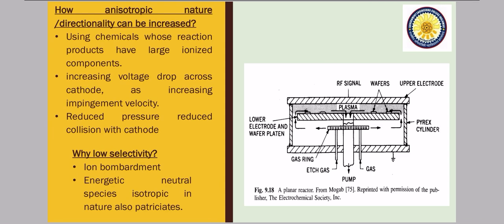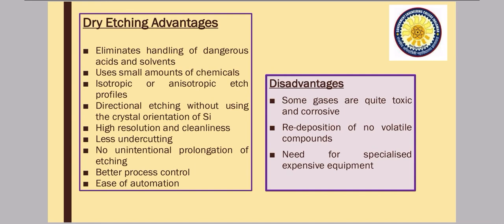Moving on, let's discuss the advantages and disadvantages of dry etching. Starting with advantages: it eliminates the handling of dangerous acids and solvents, unlike wet etching where very strong acids are used. It uses a very small amount of chemicals. We can get isotropic or anisotropic etch profiles. It allows directional etching without using the crystal orientation of silicon. It provides very high resolution and cleanliness — because there are no chemicals, there is no contamination problem. And there is less undercutting.